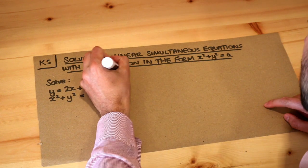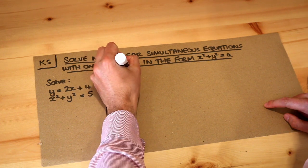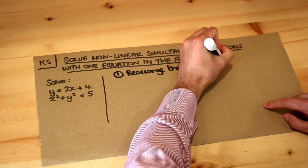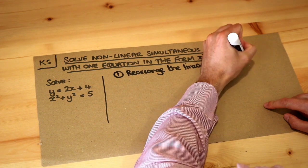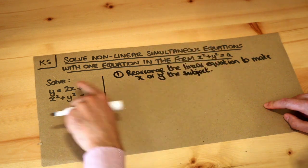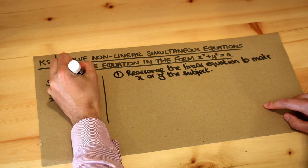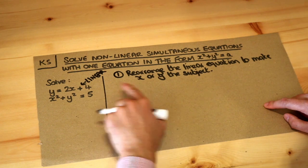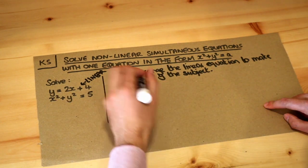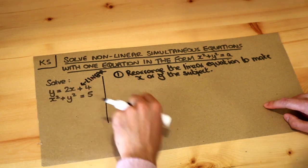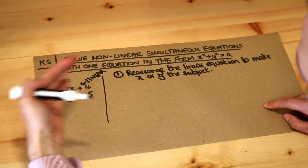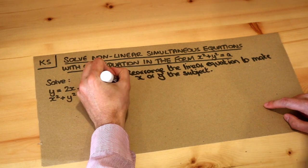Step one is to rearrange the linear equation to make x or y the subject. By the linear equation I mean the equation without the squares in it. Do we have to do anything here? Well no, y is already the subject of this equation, so we don't need to do step one. But sometimes it won't be in that form, and then you choose to either make x or y the subject.